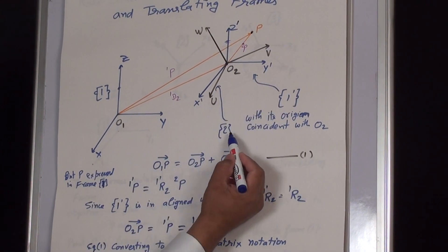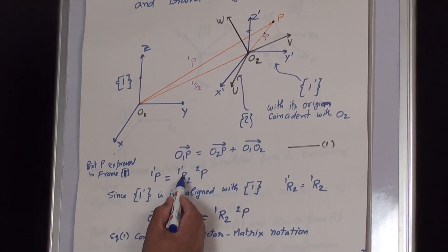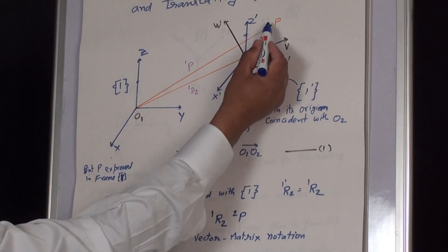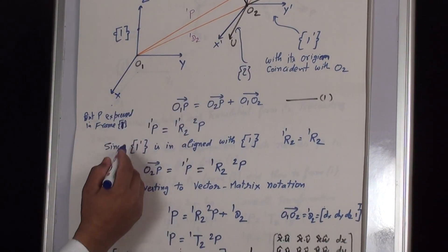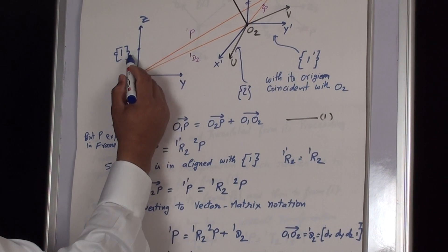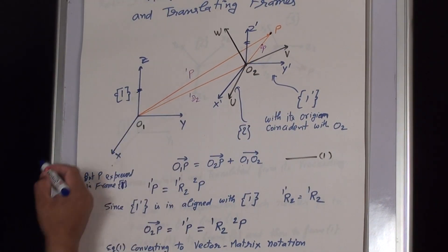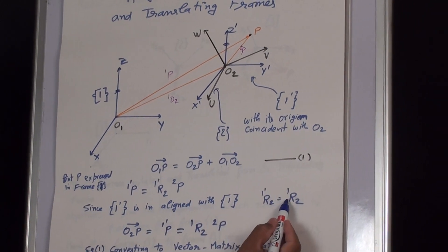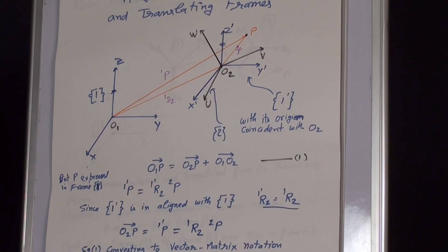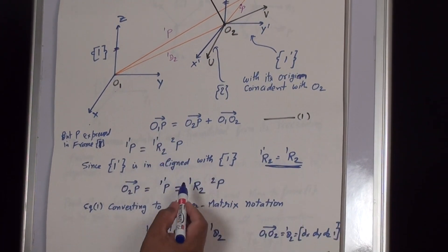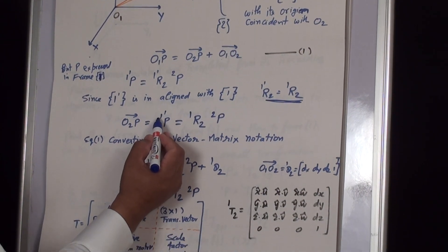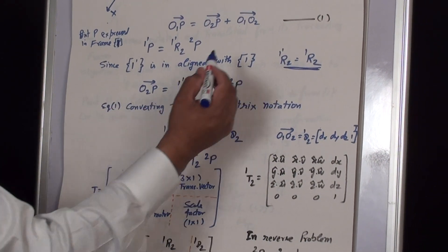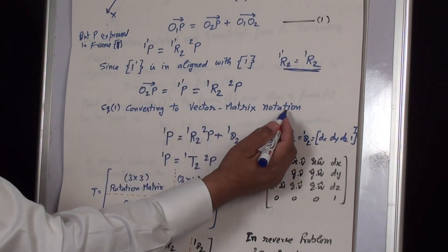The position of point p with respect to Frame 1 dash equals the rotation matrix from Frame 2 as seen from Frame 1 dash, times the position of point p with respect to Frame 2. Since Frame 1 dash is aligned with Frame 1, the rotation from Frame 2 as seen from Frame 1 dash equals the rotation from Frame 2 to Frame 1. Substituting, the position of p in Frame 1 dash equals R21 times p2.